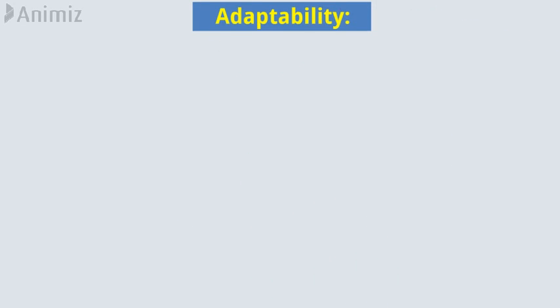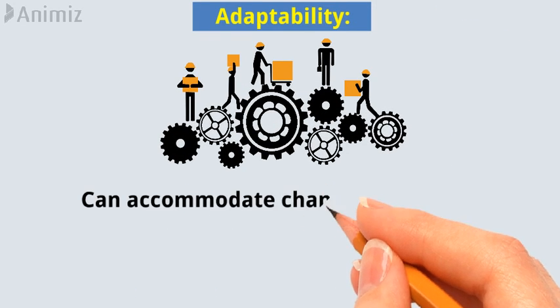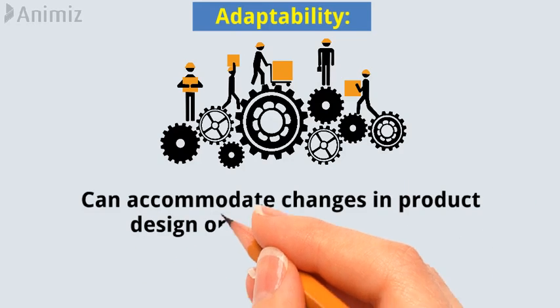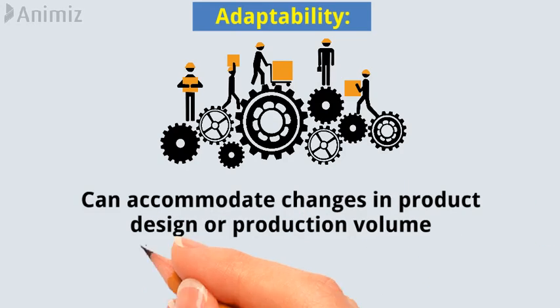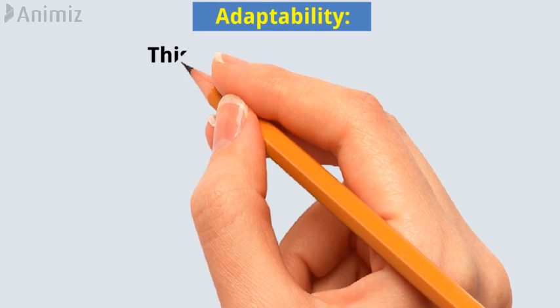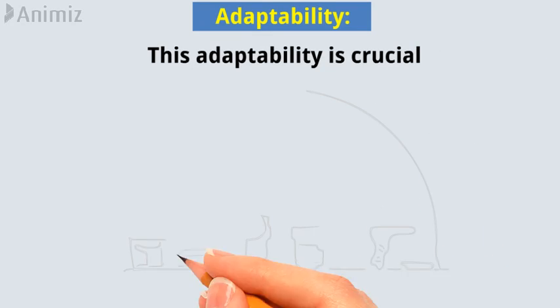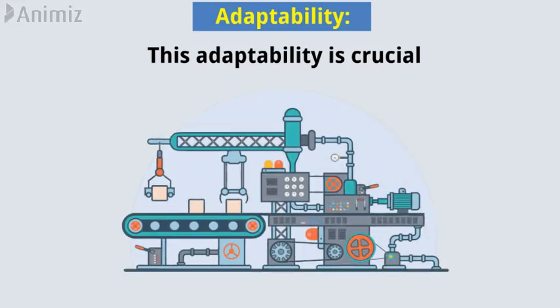Adaptability: A well-thought-out process plan can accommodate changes in product design or production volume with minimal disruptions. This adaptability is crucial in today's dynamic manufacturing landscape.